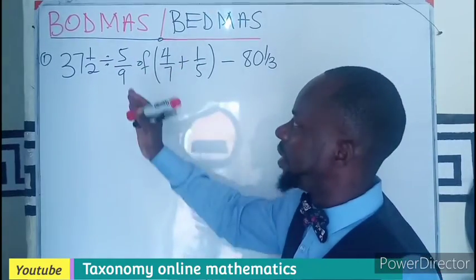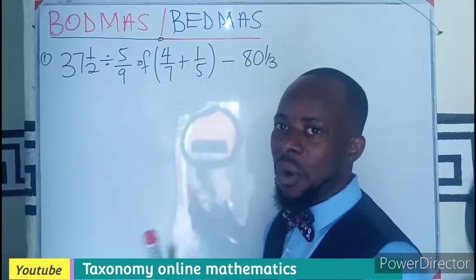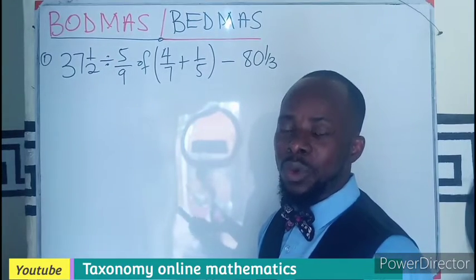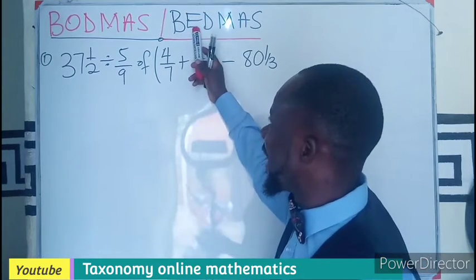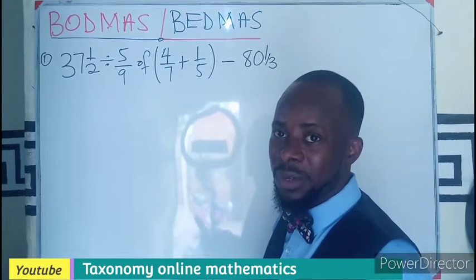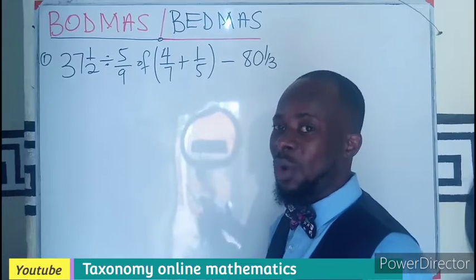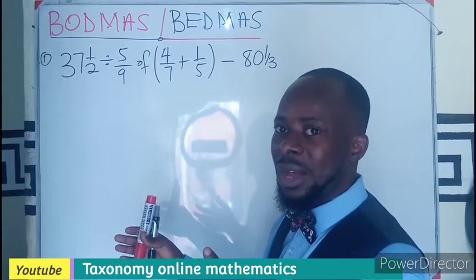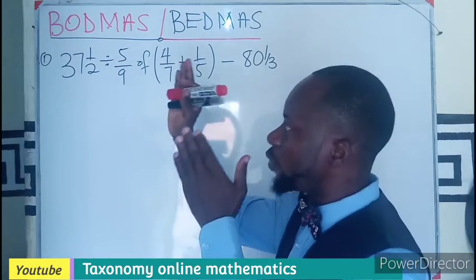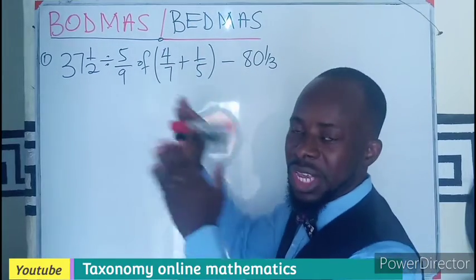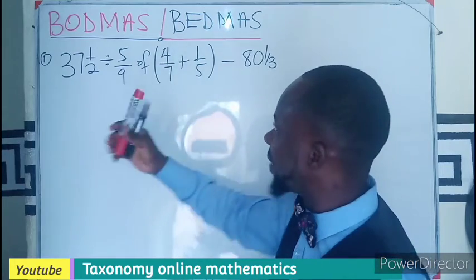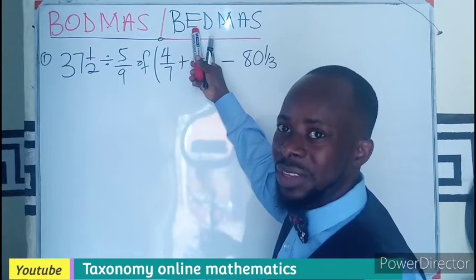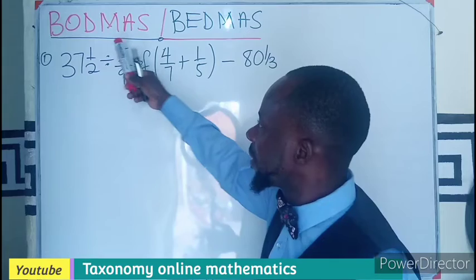B stands for bracket. The O here stands for 'of', could be exponent and all those things. E here also stands for exponent, so you deal with exponents in an order of operation. First of all we treat bracket, we treat 'of' if there is an 'of' which we also take as multiplication. We deal with that, or if there is an exponent you deal with the exponent.